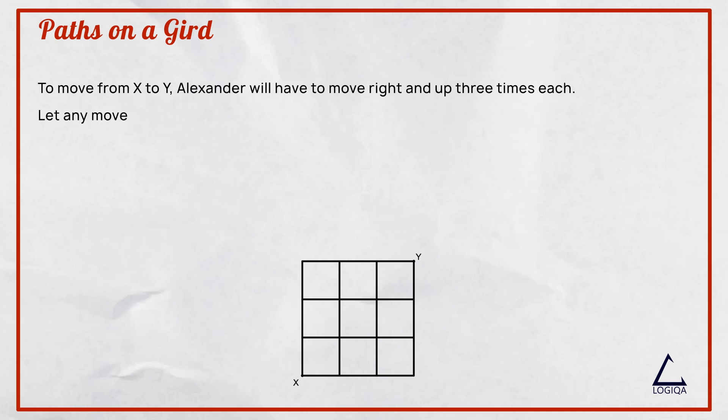Let any move rightwards be R and let any move upwards be U. So, any possible route can be depicted by 3 R's and 3 U's.